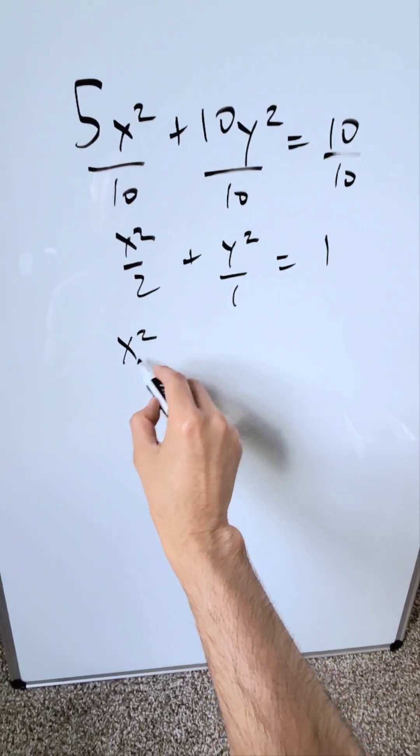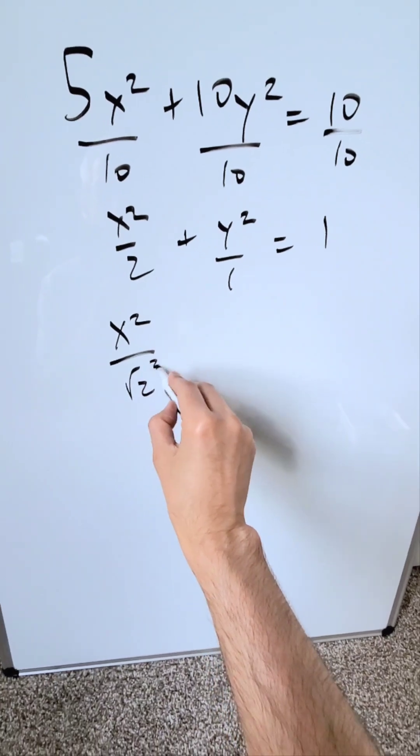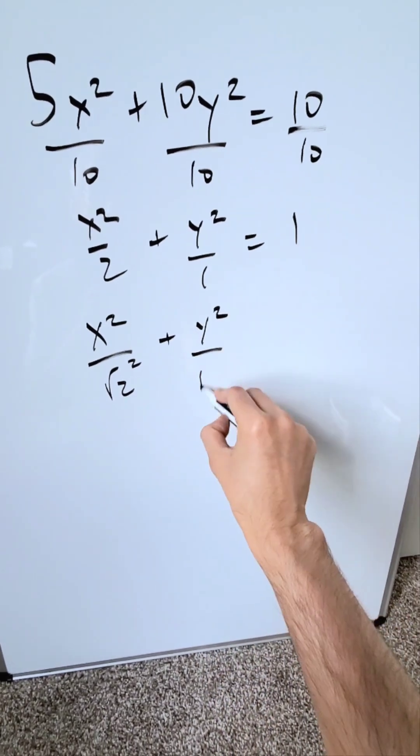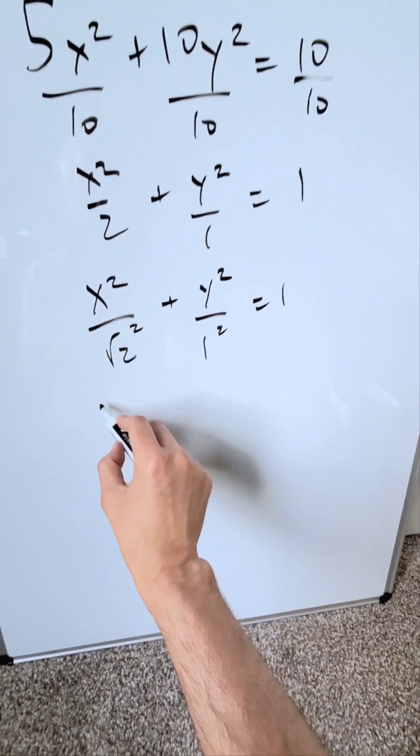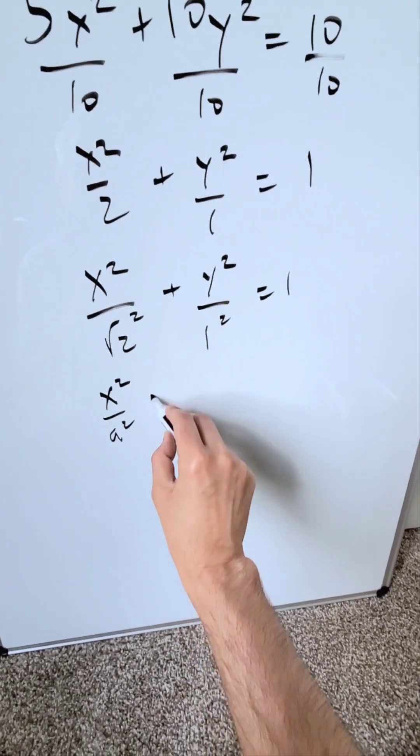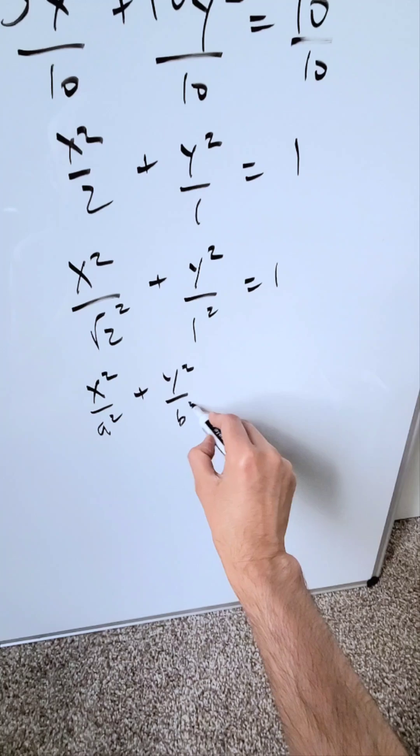Now let me rewrite this as x square over root 2 whole square plus y square over 1 square is equal to 1. I'm looking here at now an ellipse. I have here which looks something like x square over a square plus y square over b square is equal to 1.